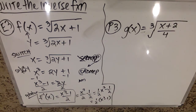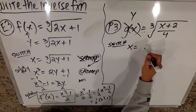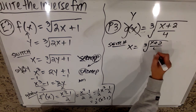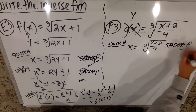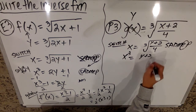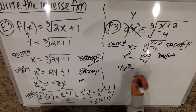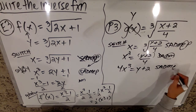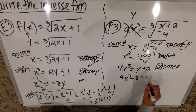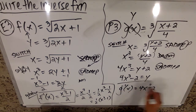You can pause me if you want. I'm going to go ahead and walk through P3. Remember that this is actually the same as Y. So the first thing I'm going to do is switch them and make this X equals the cube root of Y plus 2, all over 4. I'm going to jump right to doing SADMEP. I notice the first thing I get to is an exponent, so I get X cubed equals Y plus 2, all over 4. The next thing — there's no subtraction and addition, but there is division and multiplication, so I can multiply that 4 over. I get 4X cubed equals Y plus 2.